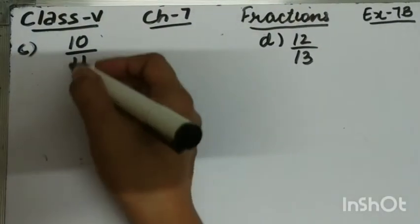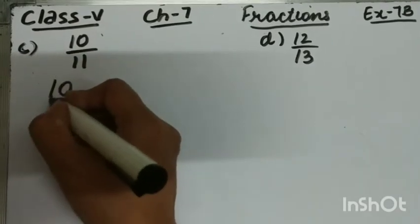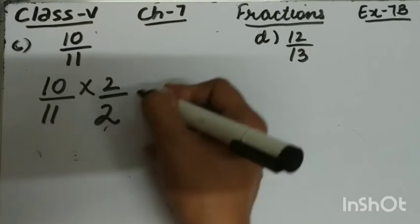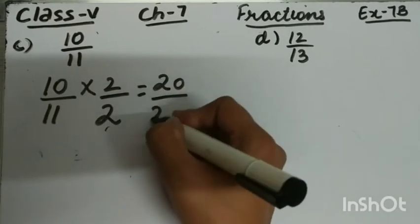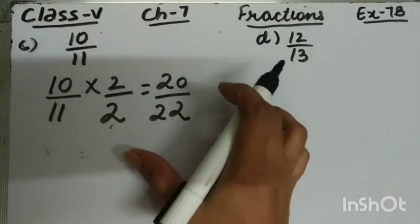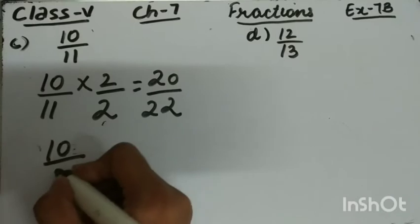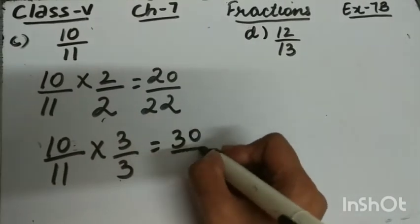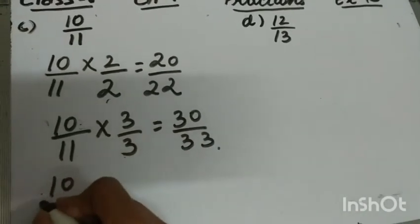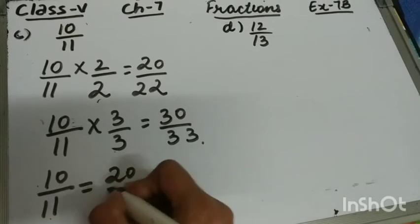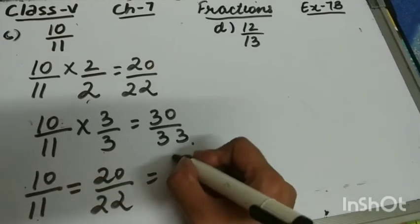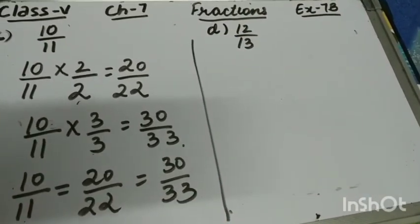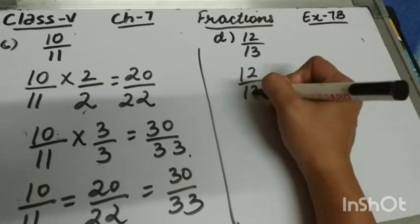Part C is 10 upon 11. First, I am multiplying the numerator and denominator by 2 — 10 twos are 20 and 11 twos are 22. This is your first equivalent fraction. Secondly, I am going to multiply it by 3, which gives 30 upon 33. So two equivalent fractions of 10 upon 11 are 20 upon 22 and 30 upon 33.